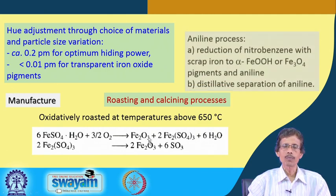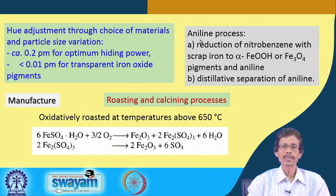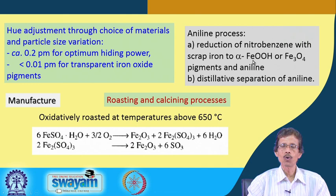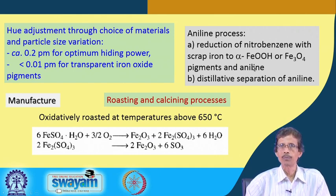The aniline process uses nitrobenzene with scrap iron. Nitrobenzene is used to form alpha FeOOH or Fe3O4 — the scrap iron is oxidized by nitrobenzene, giving FeOOH and Fe3O4 as pigmental forms, while aniline is obtained as the reduced form of the nitrogen compound and is a valuable byproduct.